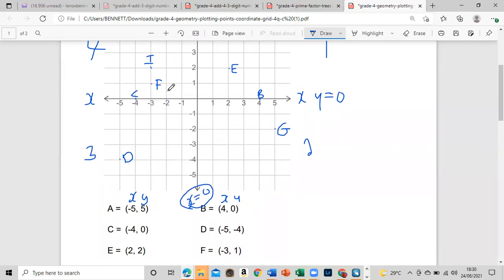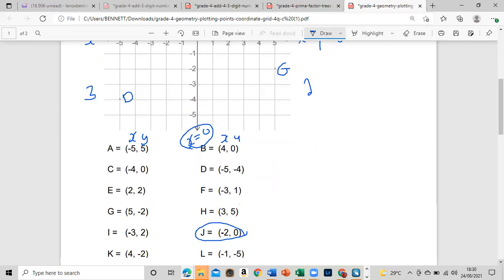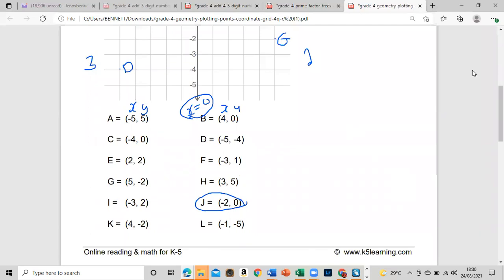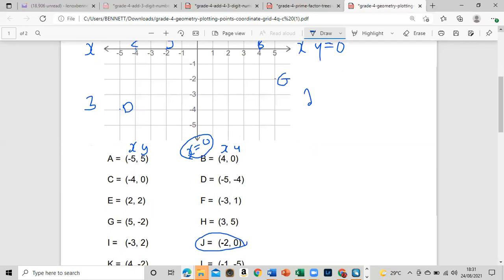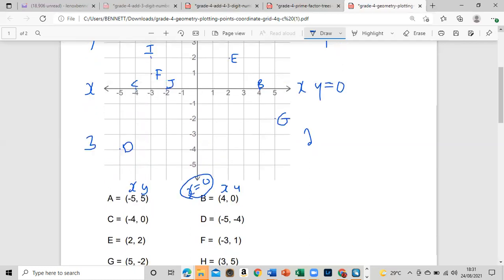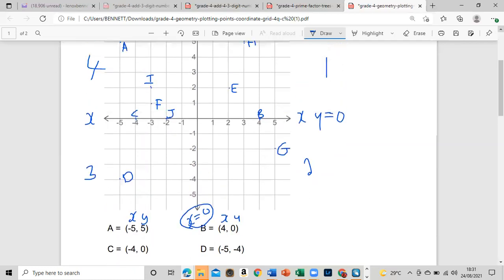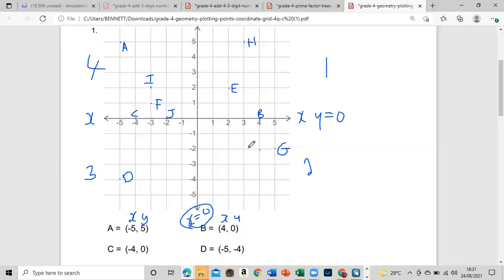The next one, we're gonna do all of them. K is four, negative two. I'm gonna give you guys one minute to indicate where that is. Four and negative two. First you find it on the x-axis, that's four, and it's negative two, so it will be right here. So this would be K.